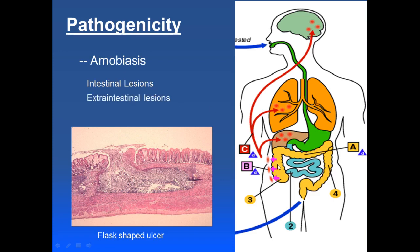Moreover, extra-intestinal lesions may also take place. The organism may enter into the portal blood and be taken up by the liver, or cause complications in the lungs and brain — mainly abscess formation. When it reaches the liver via the portal blood, it divides there, forms a mass, causes thrombosis of the hepatic arteries, and as a result necrosis of hepatic cells occurs and liver abscess is formed. Similarly, lung abscess or brain abscess may be formed.